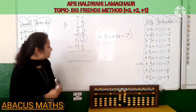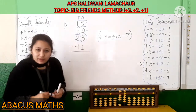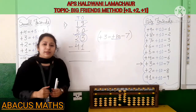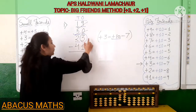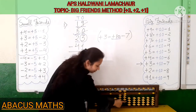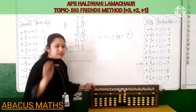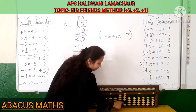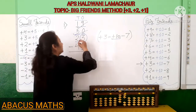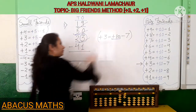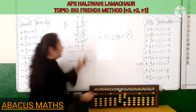So for adding this 3, we will use this big friend: plus 3 equals plus 10 minus 7. Whenever you add 10, you add it in one rod up — if you have to add 3 in the ones slot, you add 10 in the tens slot. Plus 10 is done here. Now minus 7 from the same rod: 5, 6, 7. Plus 10 in this rod, minus 7 from the ones slot, and 3 is added.